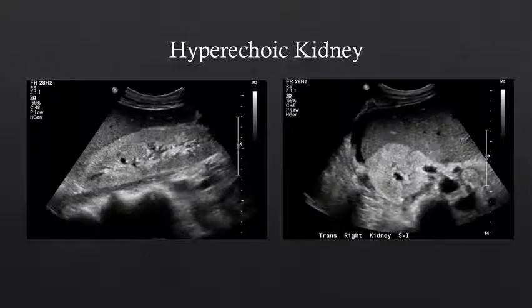Here we have an example of an abnormal or diseased kidney in a patient with chronic kidney disease. We see that the normally hypoechoic renal cortex is now hyperechoic relative to the adjacent liver.